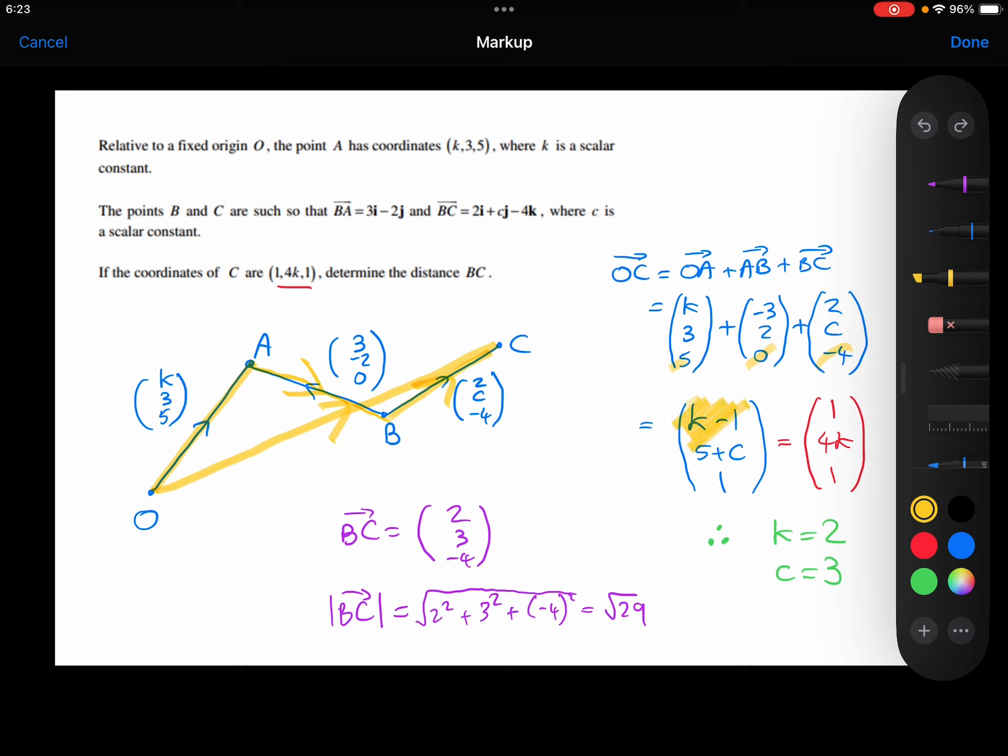So according to my diagram, this is the position vector of point C. And we were also told that that's equal to the coordinate or position vector (1, 4k, 1).